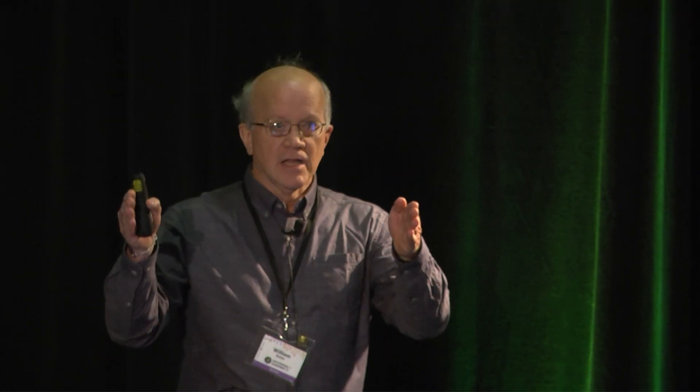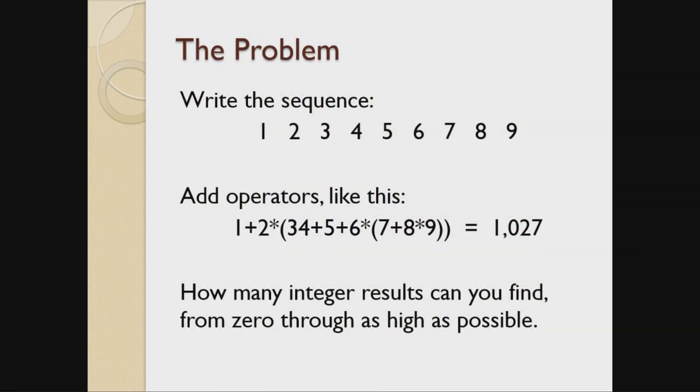The problem is easy to explain. You take a sheet of paper, write down the numbers one through nine, exactly like that, in that order, only one of each. That's your starting point.